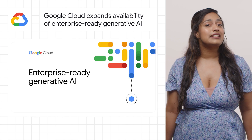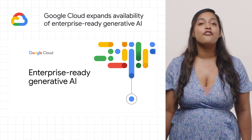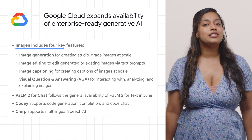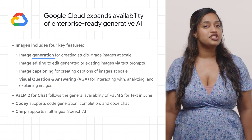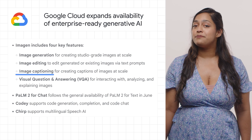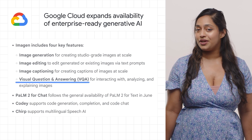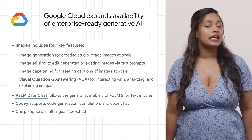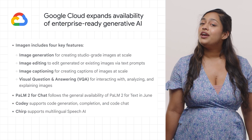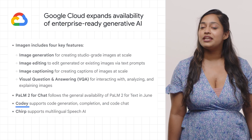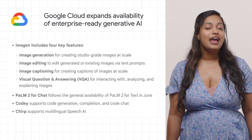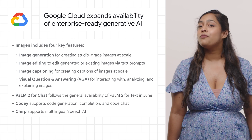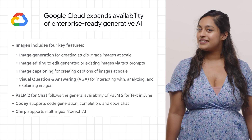Google Cloud is excited to announce the general availability of four important foundation models for Vertex AI. These include Imagine, which has image generation, image editing, image captioning, and visual question and answering features; POM2 for chat, which follows the general availability of POM2 for text; Kodi, which supports code generation, completion, and code chat; and Chirp, which supports multilingual speech AI. Learn more about all of this at the post.